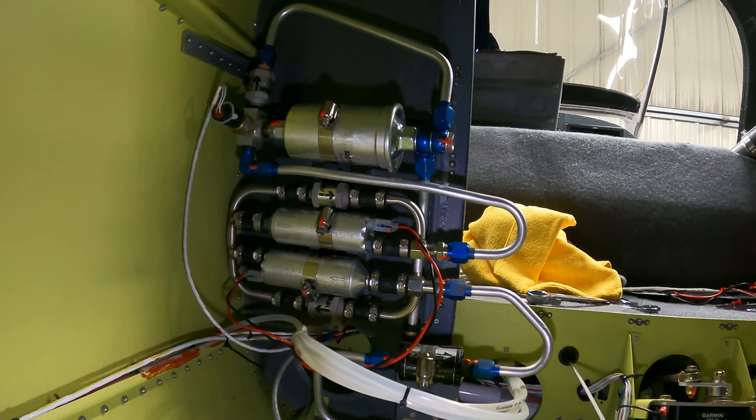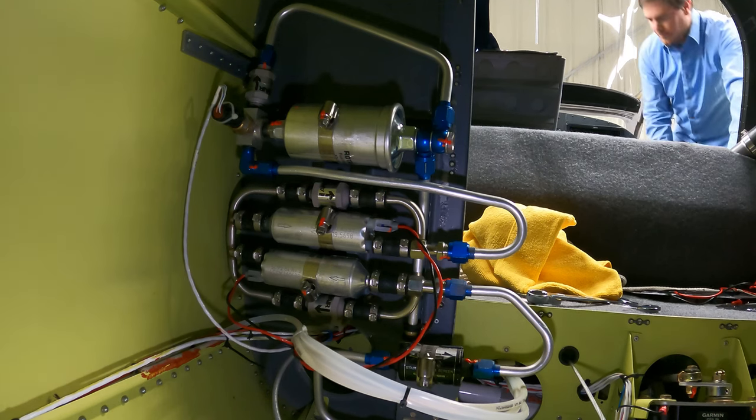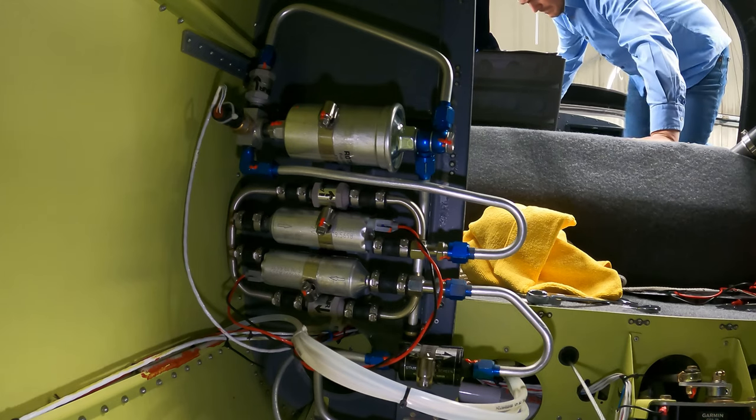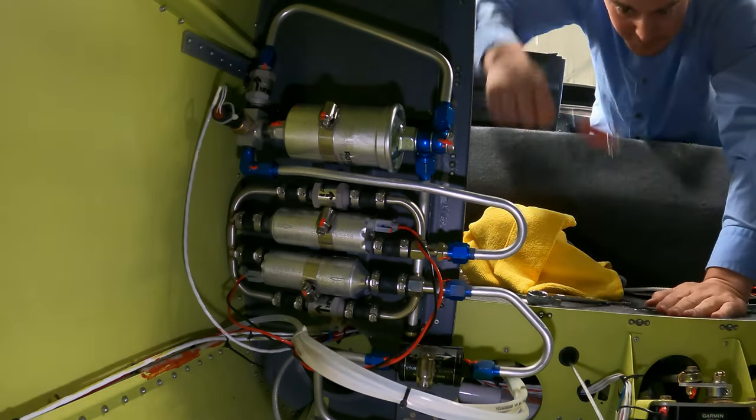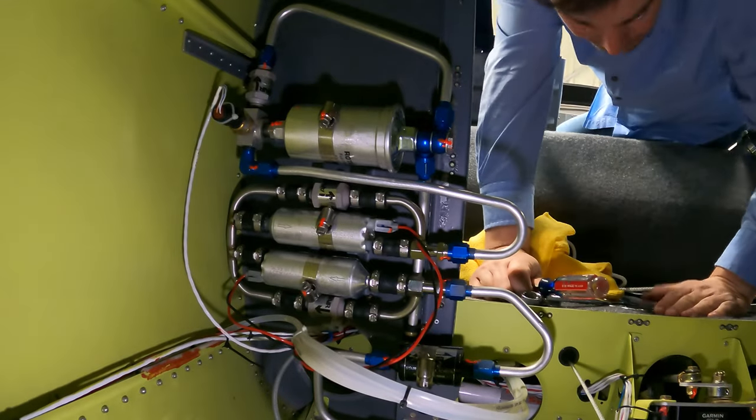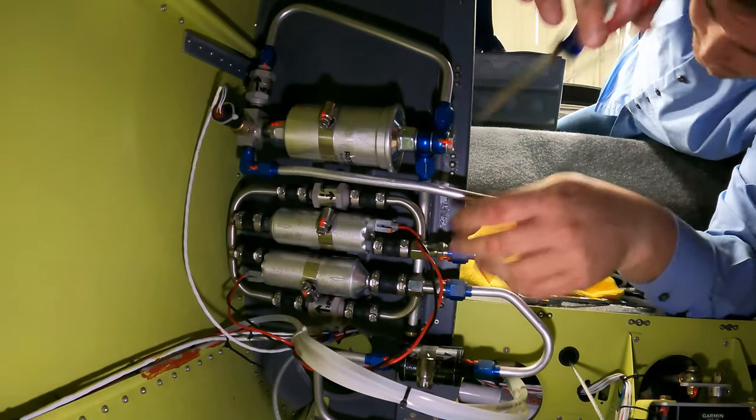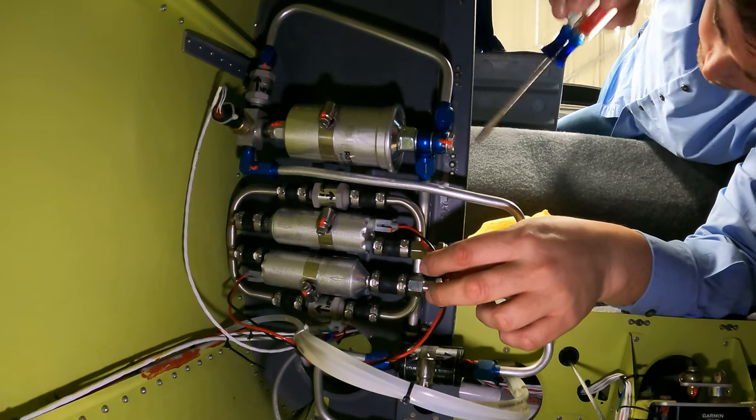We need some basic tools here. First is going to be a flathead screwdriver to pop off a couple of these electrical connectors to the fuel pumps. We're going to need two wrenches to get these fuel fittings off, and a flathead screwdriver also to remove these two hose clamps.